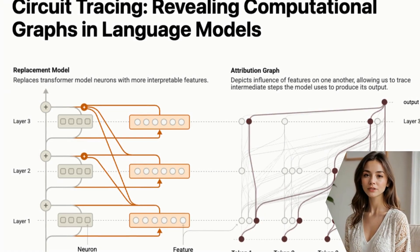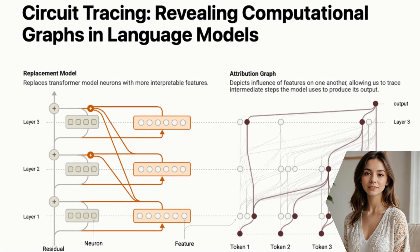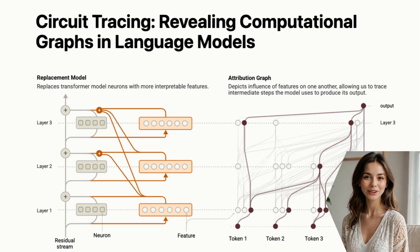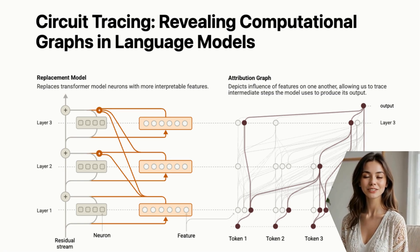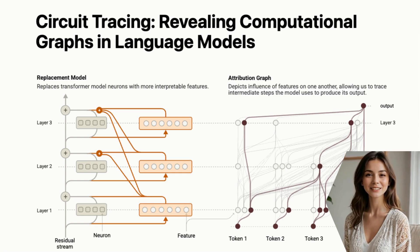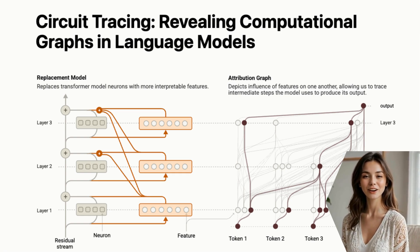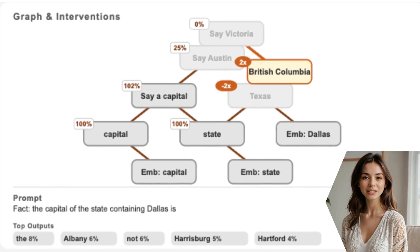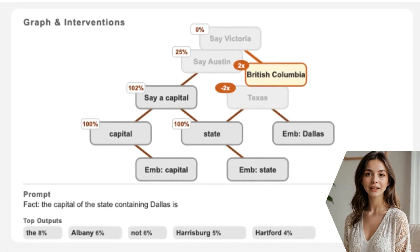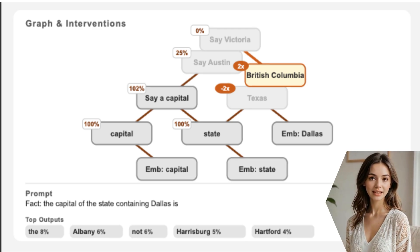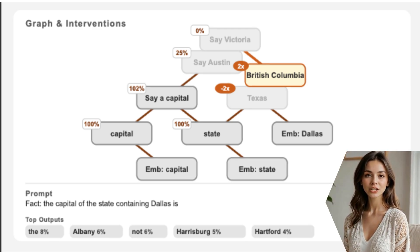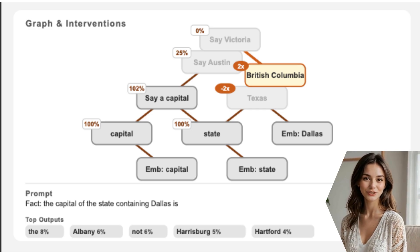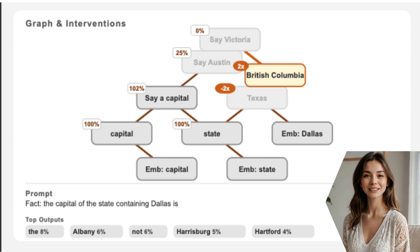The most empowering part of this research? It's open source. Anthropic released the circuit tracer library, and there's a full tutorial showing how to run these experiments yourself. For example, in the tutorial, they show how to perform an intervention. You can programmatically turn off the Texas features and see the model's top prediction change from Austin to the capitals of other states. This is how you can be sure the features you've identified are actually causing the behavior.